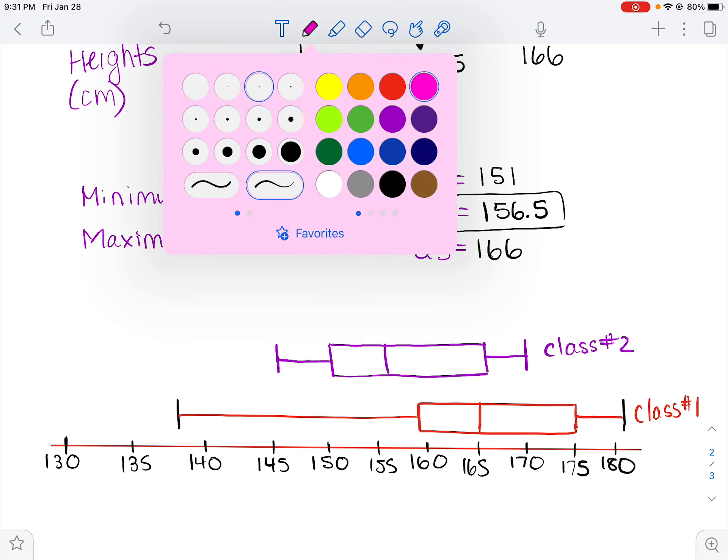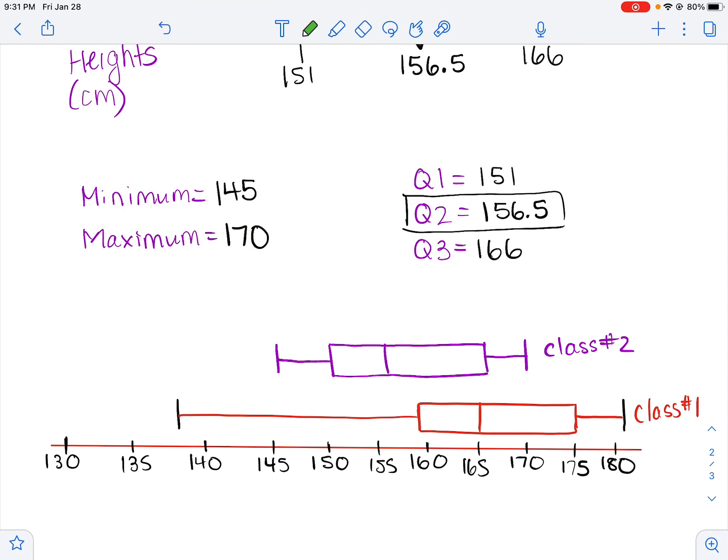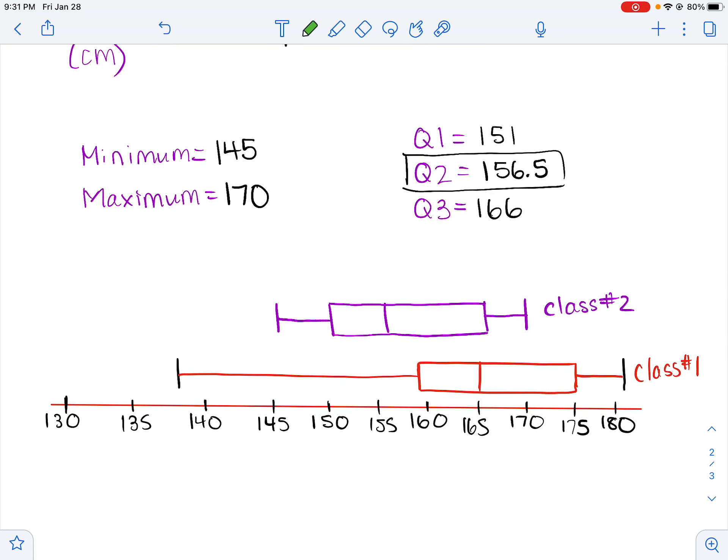So then you're kind of able to compare the two classes to each other. So just some observations. I can see that class one has a bigger spread of heights. Like it covers a larger range. There's a bigger difference between the tallest and the shortest person in the class. I can also see that the median of each class is quite different. So the median of class one is like 165 or so, whereas class two is closer to 156. So you can just see that the class two middle height is lower than class one.